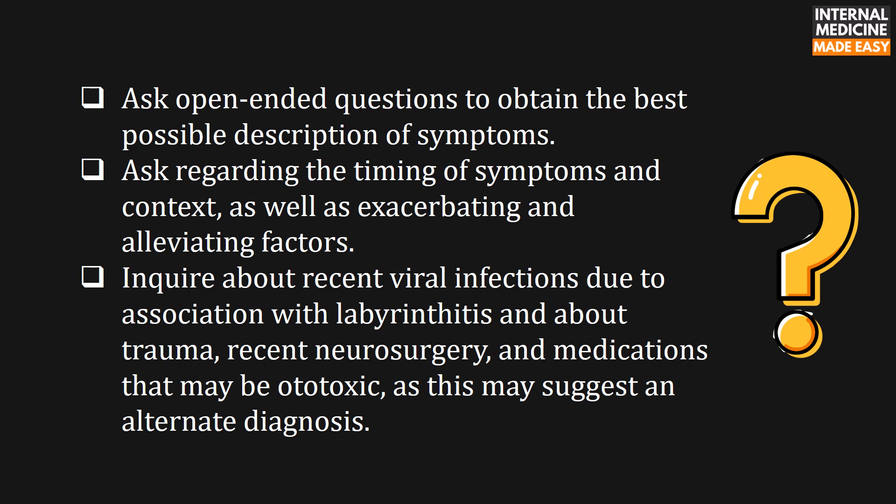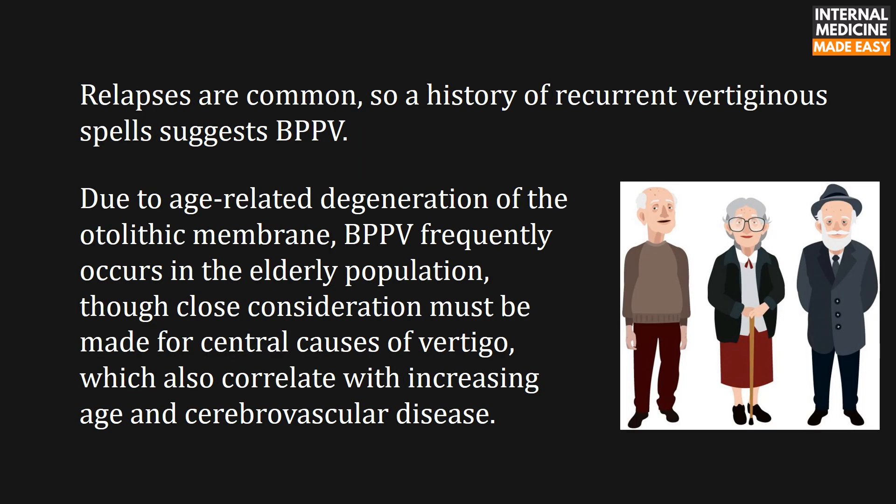Inquire about recent viral infections due to association with labyrinthitis, and about trauma, recent neurosurgery, and medications that may be ototoxic, as this may suggest an alternate diagnosis. Relapses are common, so a history of recurrent vertiginous spells suggests benign paroxysmal positional vertigo. Due to age-related degeneration of the otolithic membrane, it frequently occurs in the elderly population, though close consideration must be made for central causes of vertigo, which also correlate with increasing age and cerebrovascular disease.